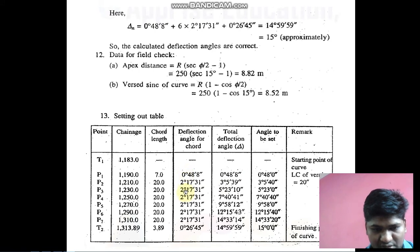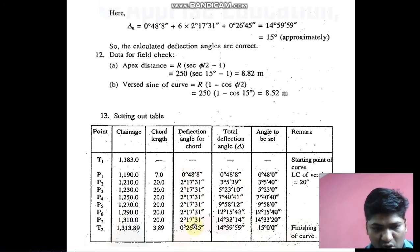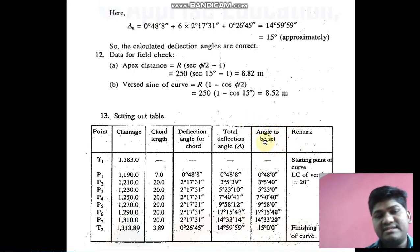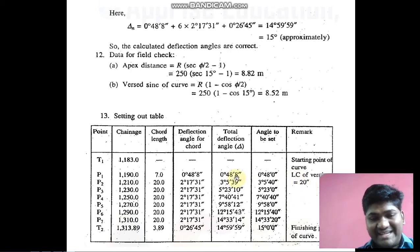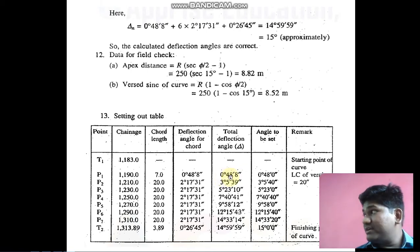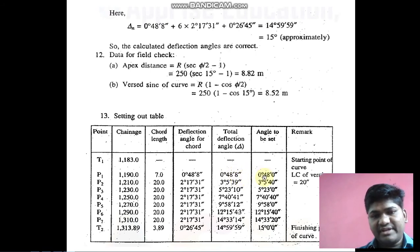For the total deflection angle column: δ1 is the first value; for δ2 add the first two angles; for δ3 add all three; for δ4 add the four angles, and so on. For the final angle, add all angles to get the cumulative total. The next important column is 'angle to be set.' The least count of the theodolite plays a very important role here — if the least count is 20 seconds, I cannot set an angle of 8 seconds.